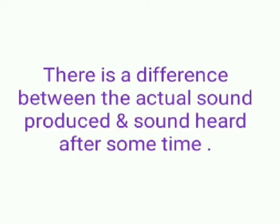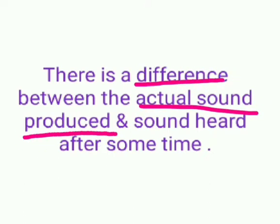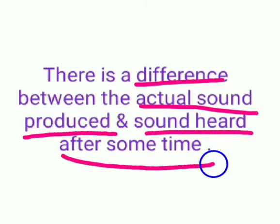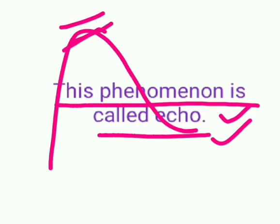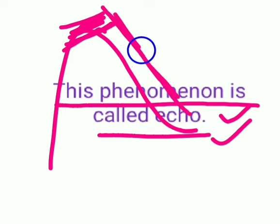This difference between the actual sound produced and the sound heard after some time is basically called echo. Suppose you are on a hill and you speak loudly — you will hear two sounds: one the actual sound, and one is the delayed sound. This phenomenon is called echo.